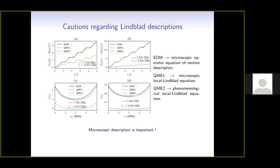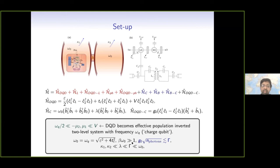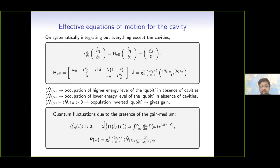Question: Why is there no noise operator corresponding to the reservoirs into which losses are happening? Answer: That is only because I have taken very low temperatures and neglected that contribution in comparison. At very low temperatures, you can show that the main noise is the one shown, and the other is much smaller. I have kept it and checked — it really doesn't make any difference at least on these timescales.